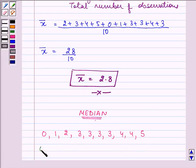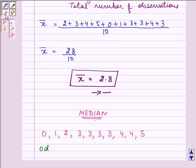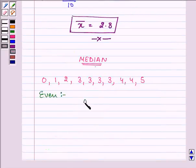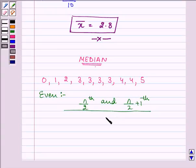Since the number of observations is even, we will be using the formula for finding the median when the number of observations is even. That is, n by 2th and n by 2 plus 1th observation. And then we need to find the mean of these two. That means the whole divided by 2.